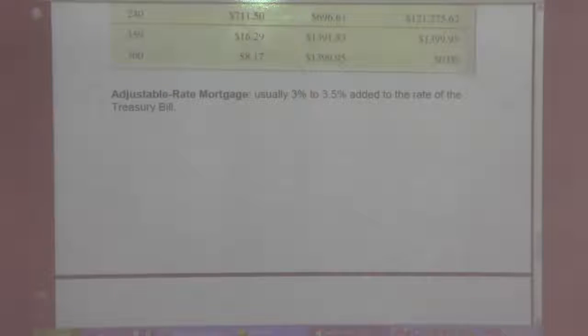Now, an adjustable rate mortgage usually is between 3% to 3.5% added to the rate of the Treasury bill.